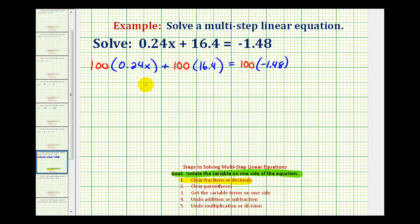Remember, as long as we multiply every term by the same value, we have an equivalent equation. When we multiply it by one hundred, we're going to move the decimal point to the right two places. For this first product, we'll have twenty-four x.